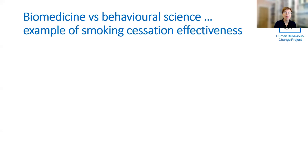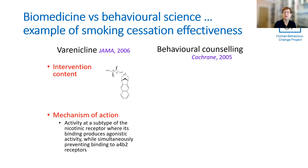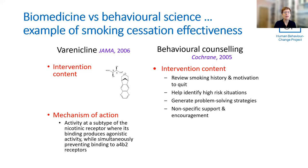Look at the contrast between biomedicine, say in relation to smoking cessation interventions. Varenicline, a pharmaceutical intervention, has very precise intervention content and the mechanism of action specified. When it comes to behavioural interventions, a Cochrane review from 2005 is again very vague, with a non-replicable description and no mechanism of action described.